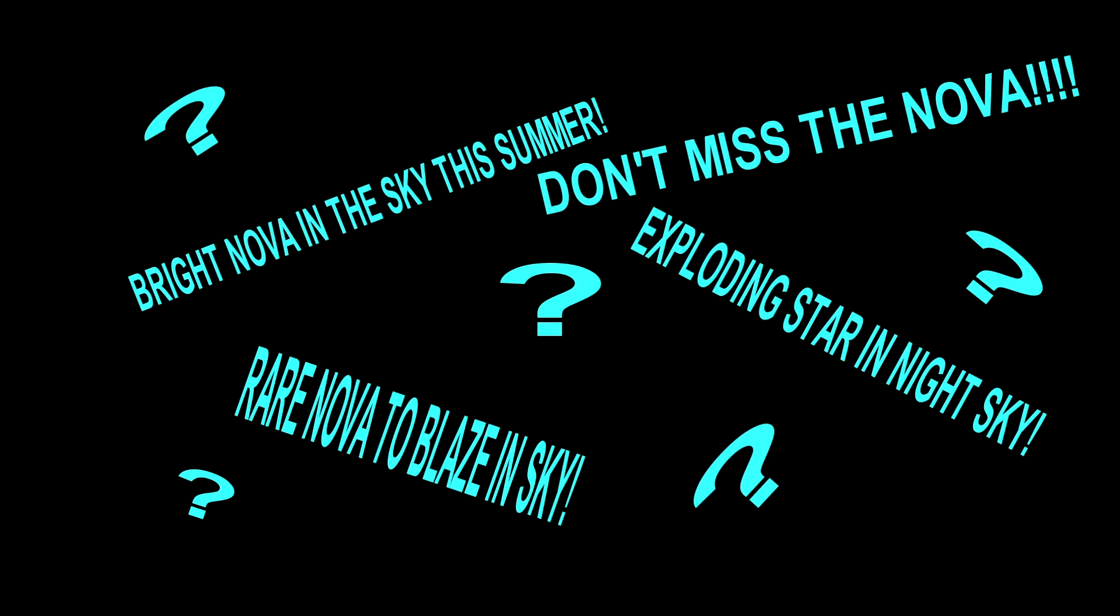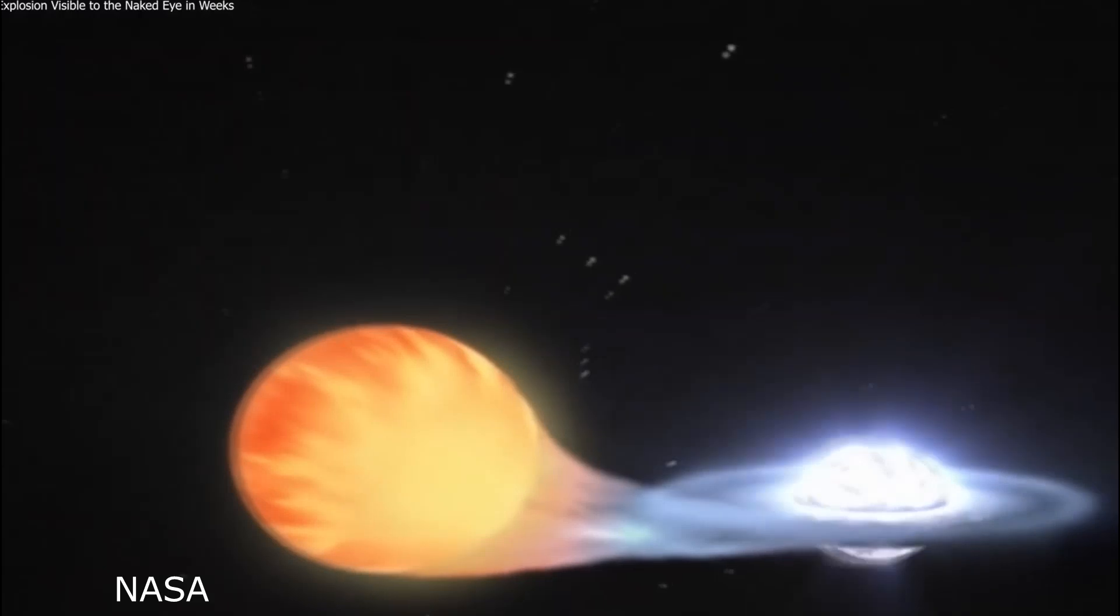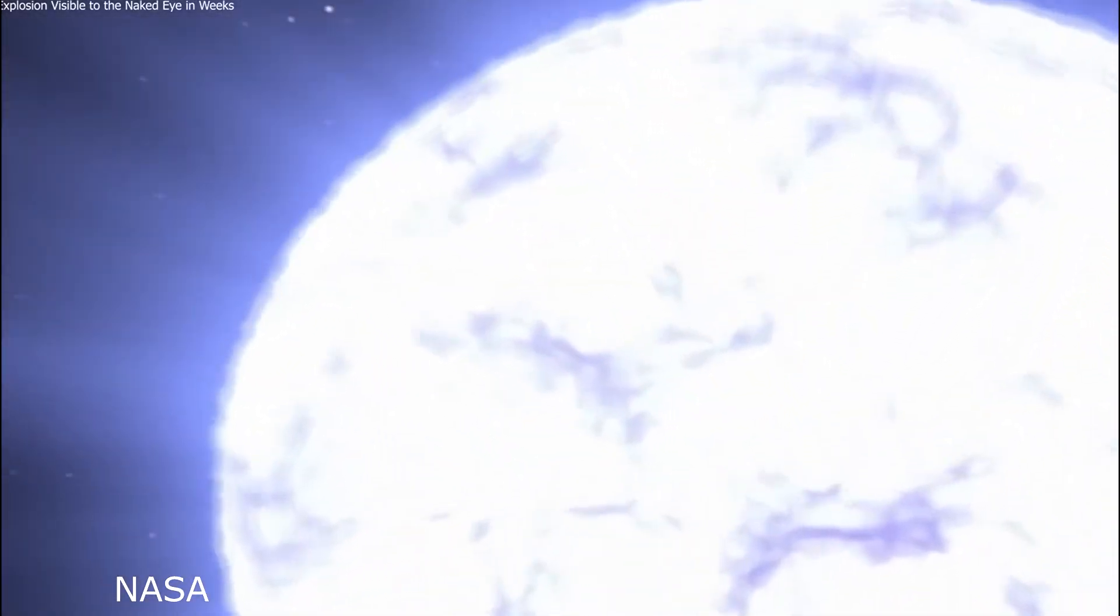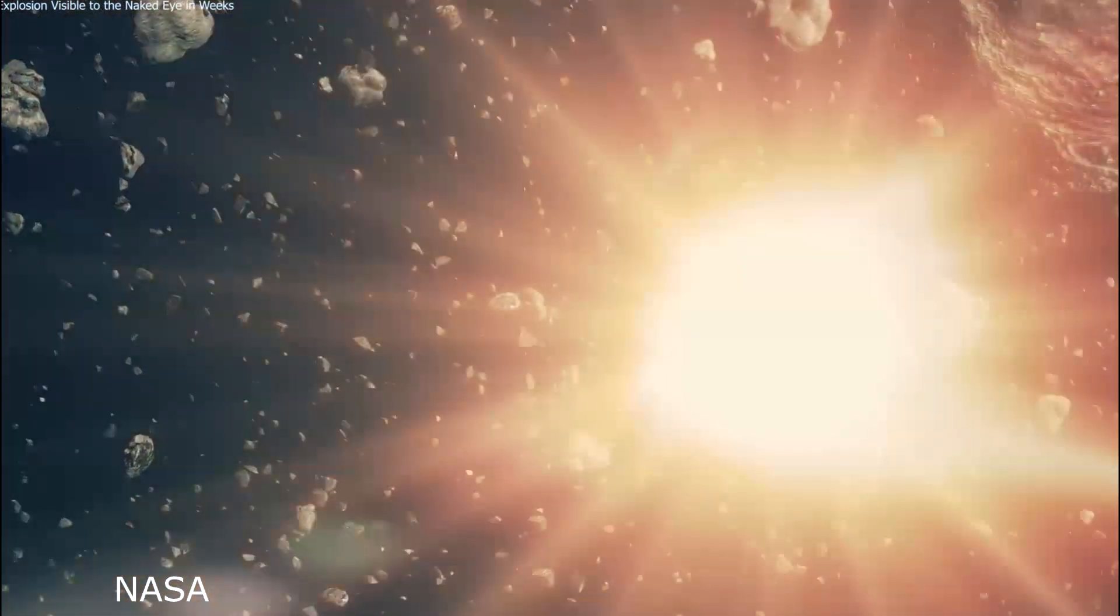This nova involves a double star system where a giant red star is close enough to a white dwarf star where they're orbiting each other, and hydrogen gas from the giant star is being poured onto and building up around the denser dwarf star due to gravity. After about 80 years or so, this gas ignites in a thermonuclear explosion that blows the built-up gas away in a very bright explosion. The smaller star briefly becomes bright enough to be seen in our sky for just under a week.